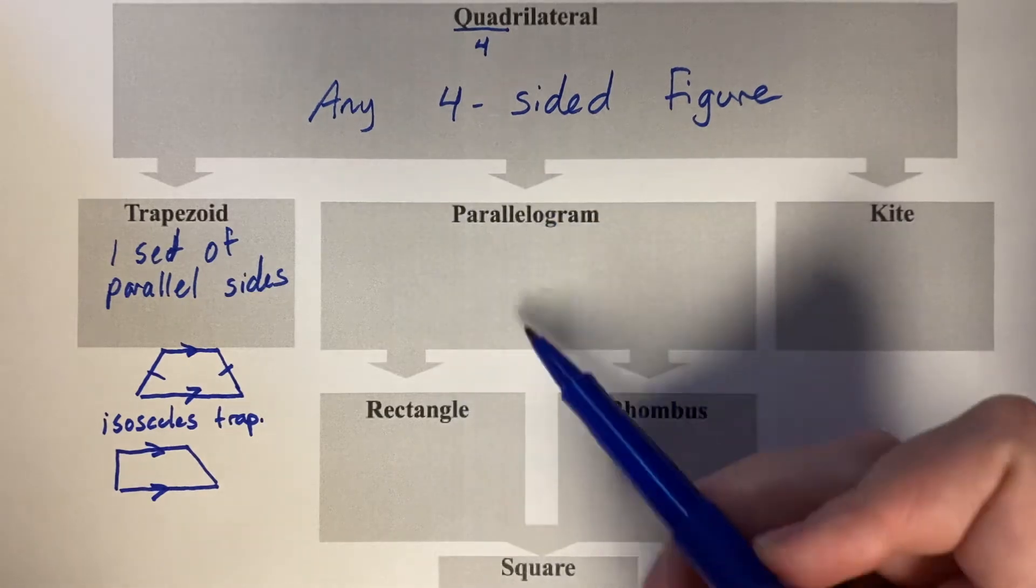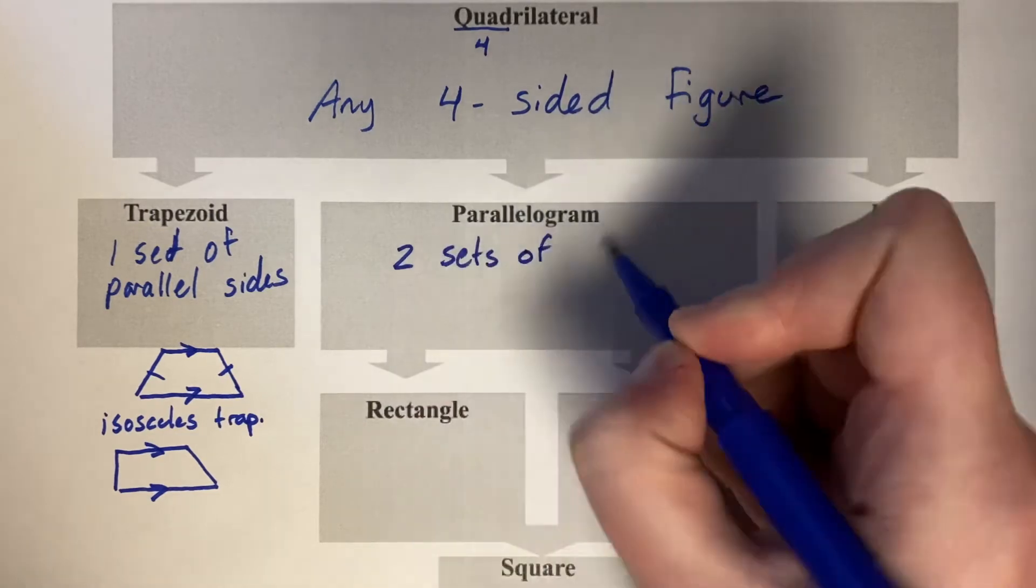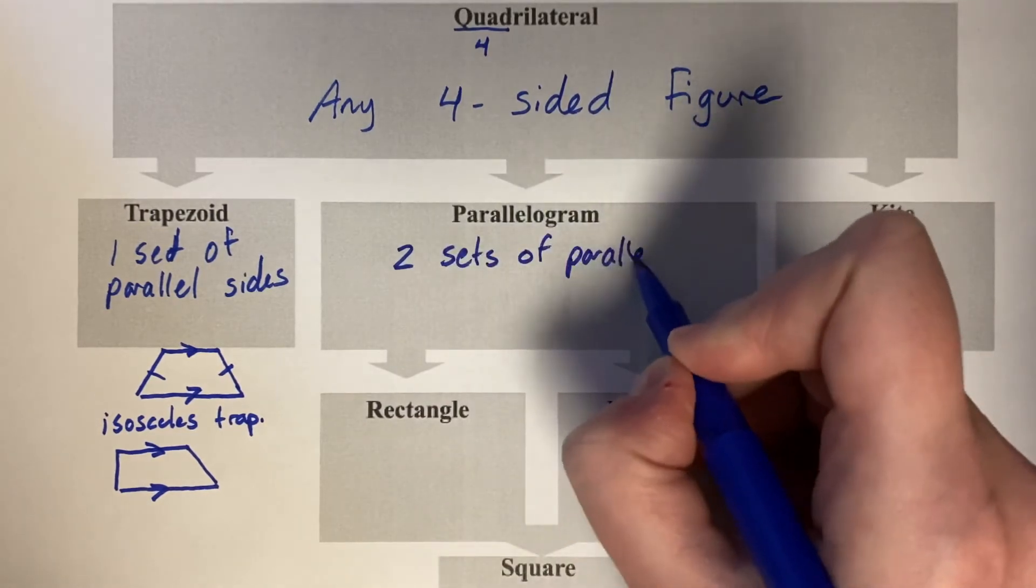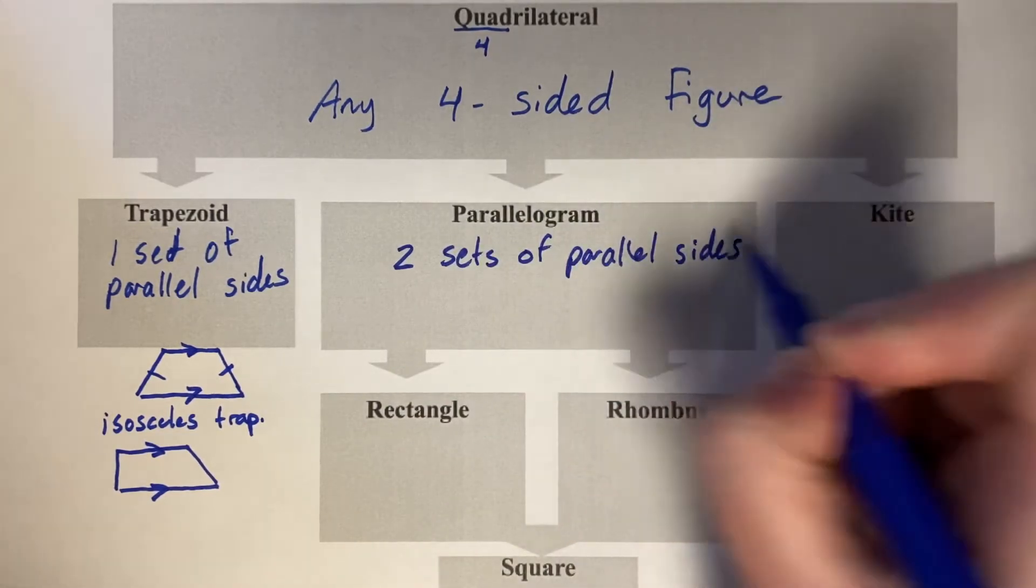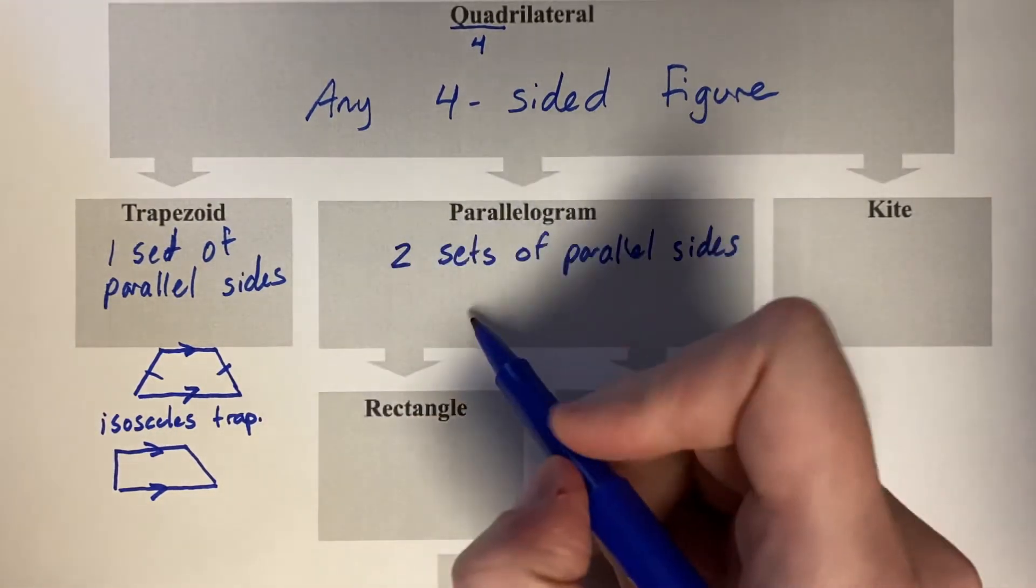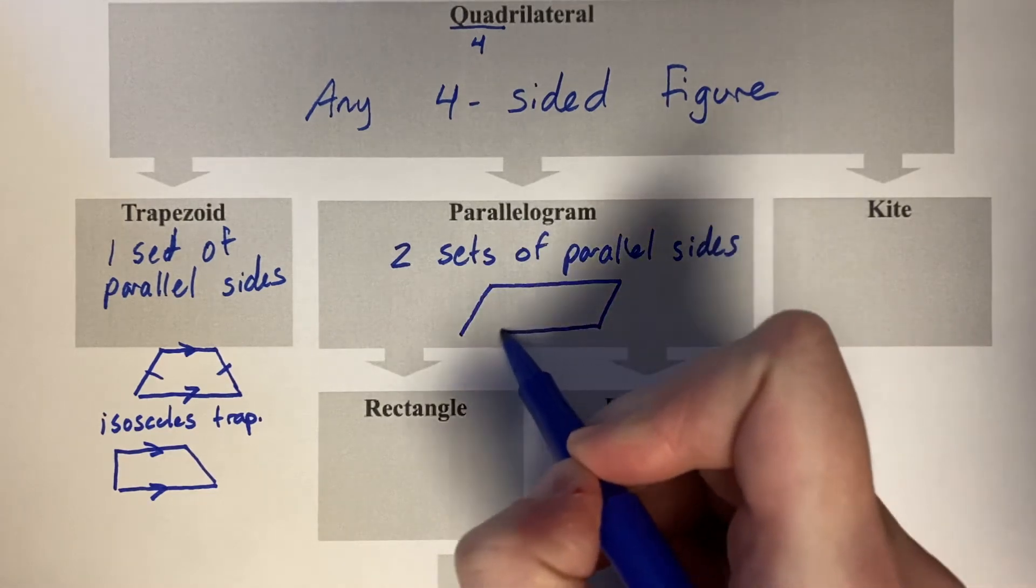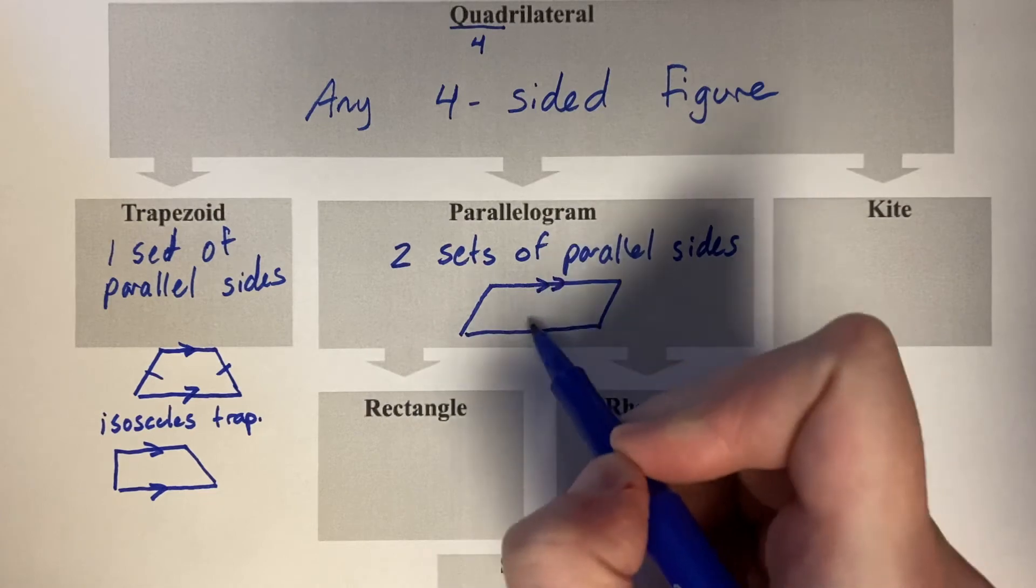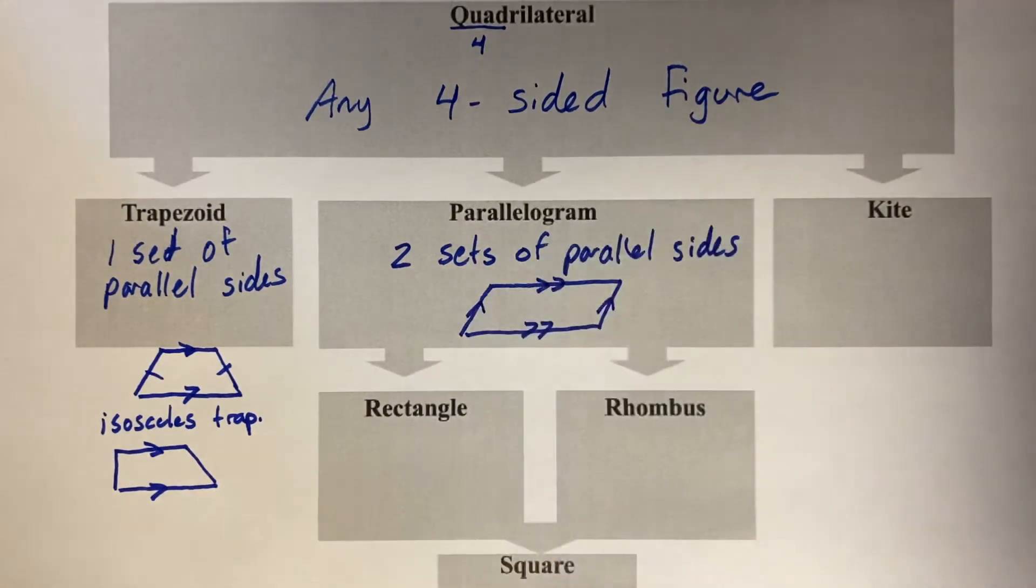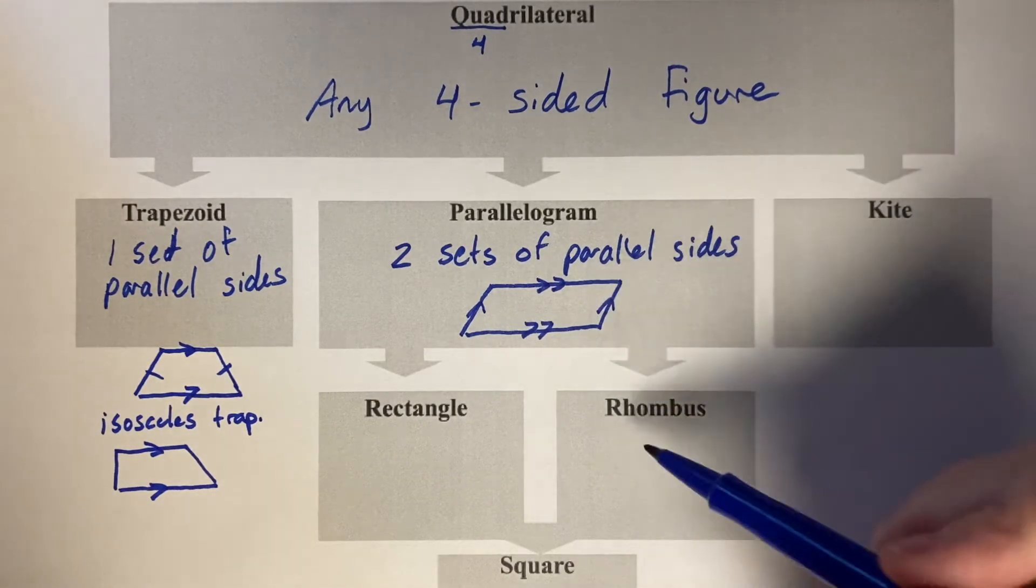Then you can split into a category of two sets of parallel sides. In general, I like to think about a parallelogram as a knocked over or push to the side rectangle, where these two sides are parallel and these two sides are parallel. This is a general parallelogram.